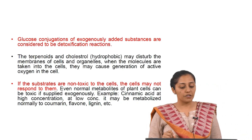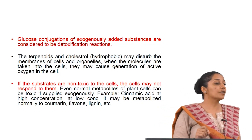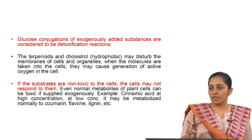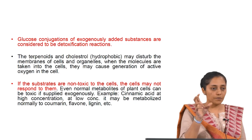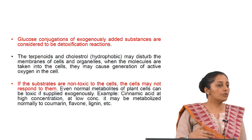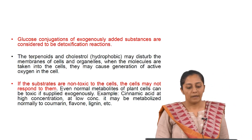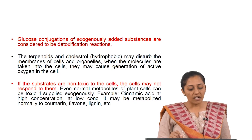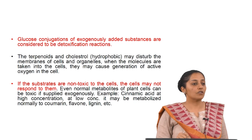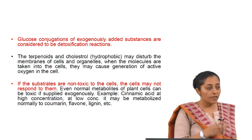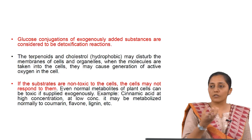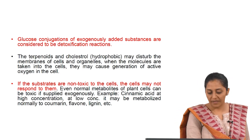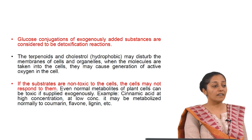Glucose conjugations of exogenously added substances are generally considered detoxification reactions. If glycosylation is needed — the addition of a glucose moiety — plant cells can be used as biotransformants. Terpenoids and cholesterols, which are hydrophobic, may disturb cell membranes and generate reactive oxygen species when taken directly into the cell; therefore the cell glycosylates them to detoxify. If substrates are non-toxic to the cells, the cells may not respond to them.